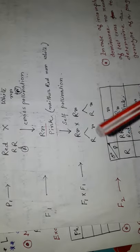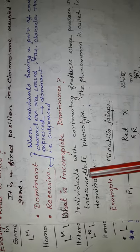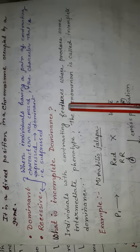This condition or phenomenon is known as incomplete dominance. What is incomplete dominance? When individuals with contrasting features produce some intermediate phenotype, the phenomenon is called incomplete dominance.